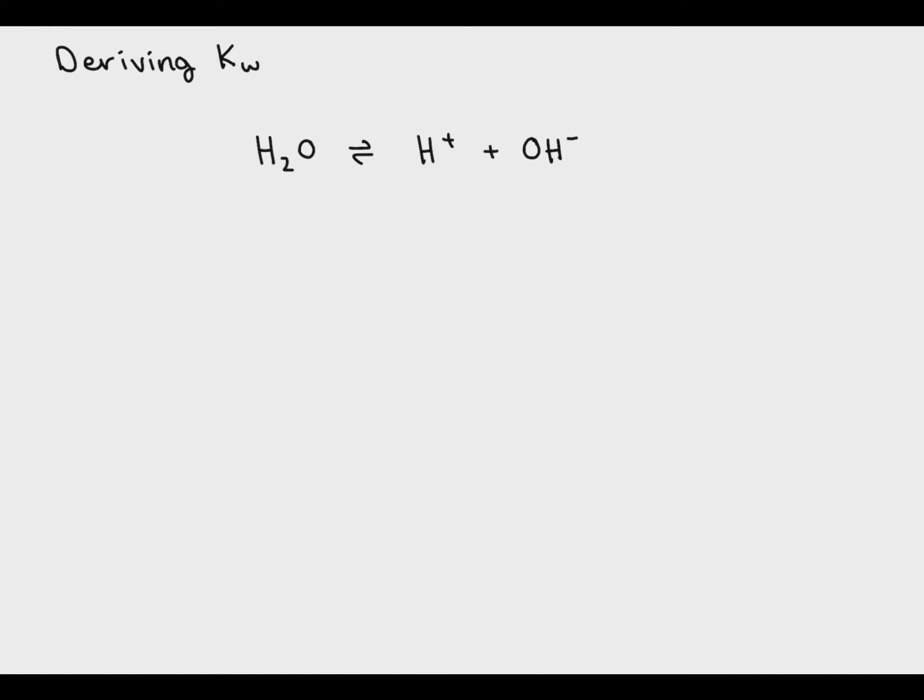So now let's look at where it comes from. Here I've got the dissociation of water. And remember that any equilibrium expression is simply products over reactants. So here if I write products over reactants, I simply get OH- times H+. Remember that liquids and solids are not included in equilibrium constants.